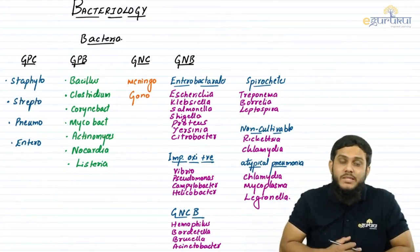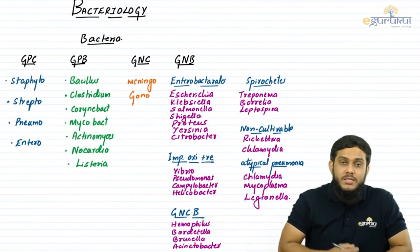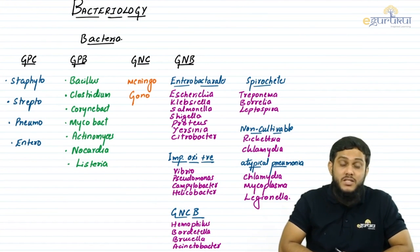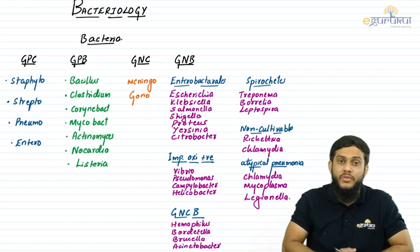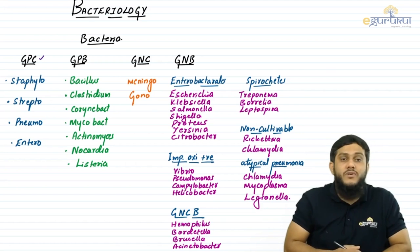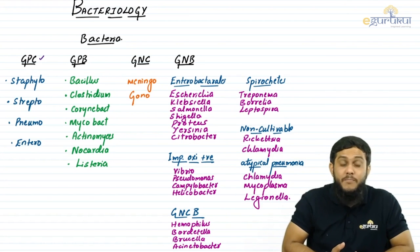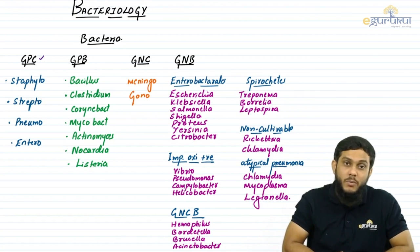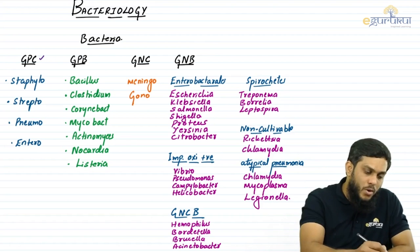In this session, let's discuss bacteriology. Bacteriology is the study of bacteria. Bacteria are mainly classified based on gram stain and shape into four groups: GPC (gram positive cocci), GPB (gram positive bacilli), GNC (gram negative cocci), and GNB (gram negative bacilli).